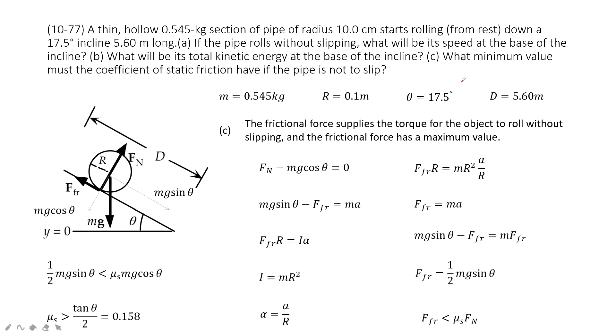The third one asks you to find the minimum value of the coefficient of static friction. So for this one, we can consider we must do the force analysis. The friction force supplies the torque for the object to roll without slipping. Do you agree? Yes. So we project the gravity in two directions, mg cosine theta and mg sine theta.